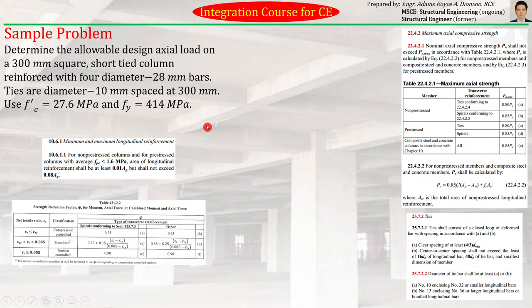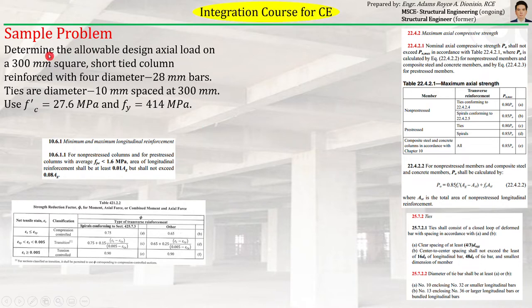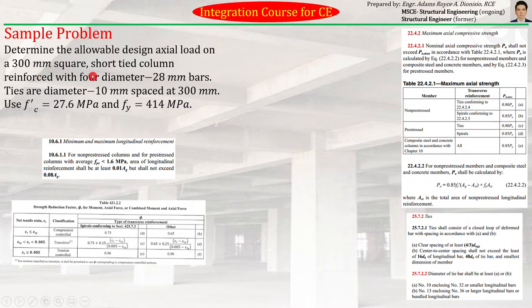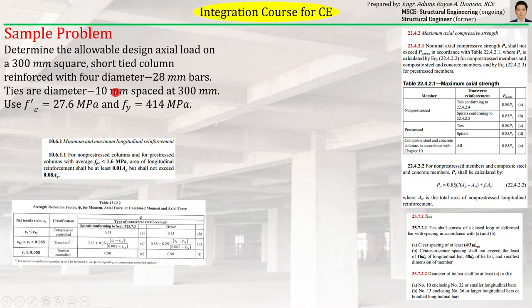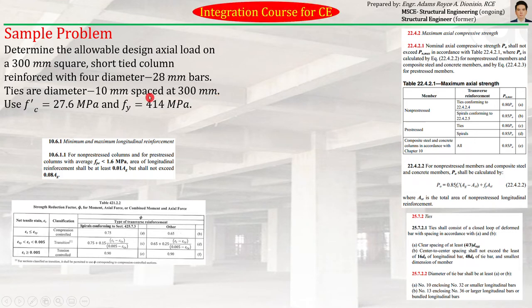Let's try answering this sample problem. Determine the allowable design axial load on a 300 mm square short tied column reinforced with 4 diameter 28 mm bars, ties are diameter 10 mm spaced at 300 mm.